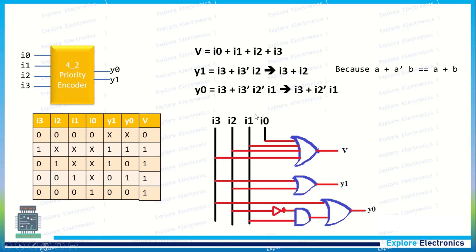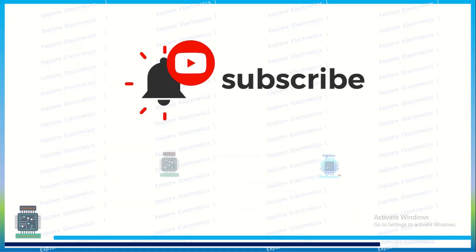i3 and the output of this will be taken to an OR gate. This gives y0. So this is the logic gate implementation for the 4 to 2 priority encoder logic circuit, while taking the priority to i3 highest priority and lowest priority to i0, and also we are generating the valid signal. Thank you.